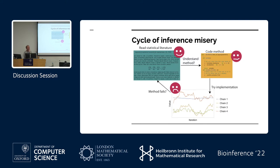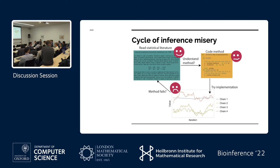One thing that helped me escape the cycle of inference misery was probabilistic programming languages — there's Stan, there's Turing in Julia, lots of these with different algorithms. The advantage is you code your model once and can try out more than one different method, and you know the implementation is going to be right because someone else has tested it. Using other people's implementations of algorithms can be really helpful — if the code is available and you have something plug-and-play, a probabilistic programming language can really help.